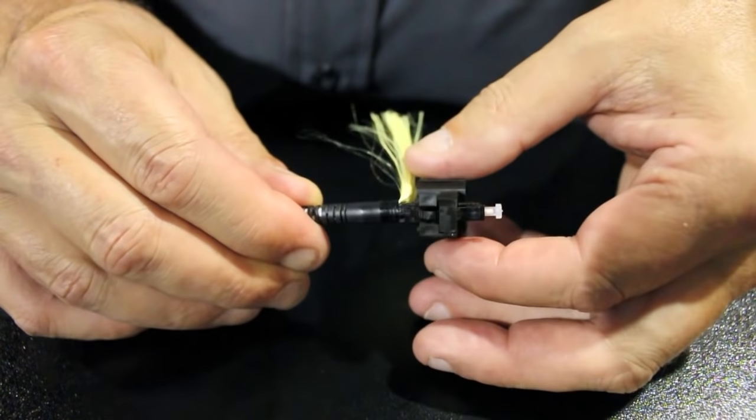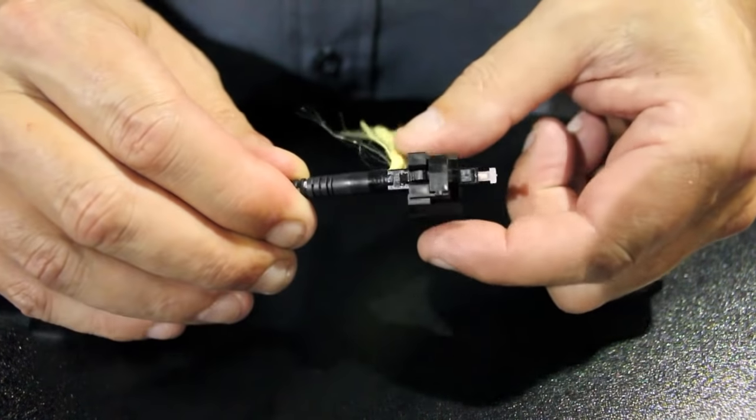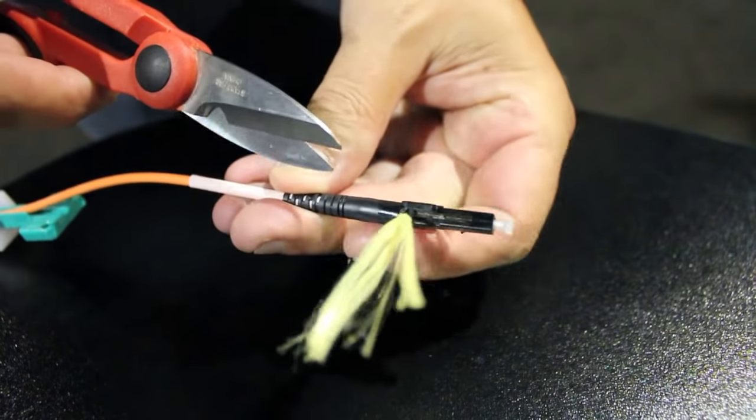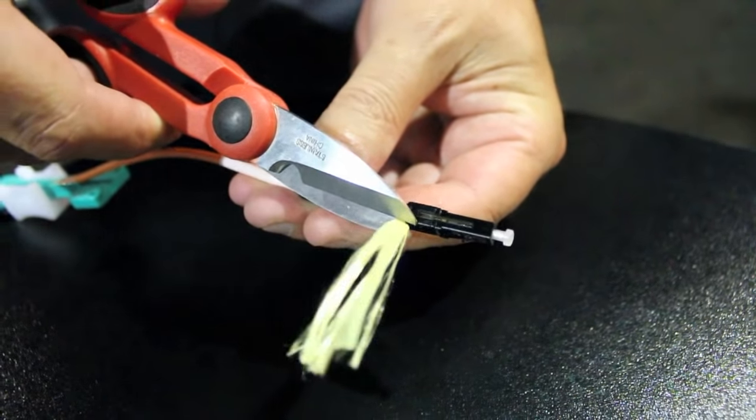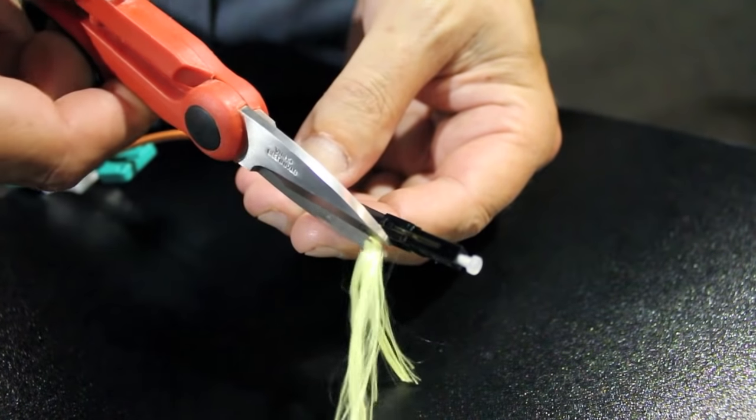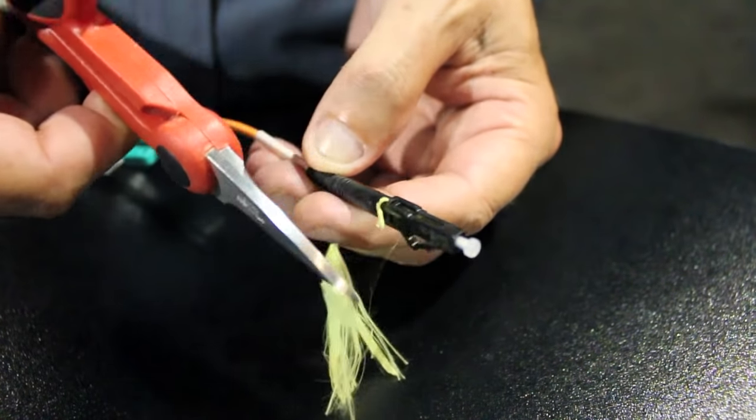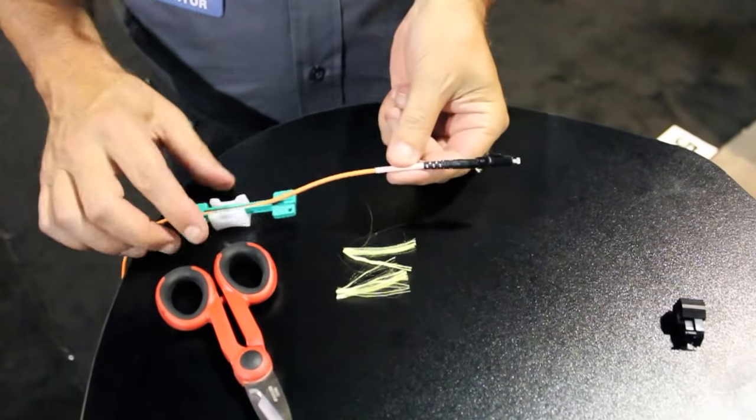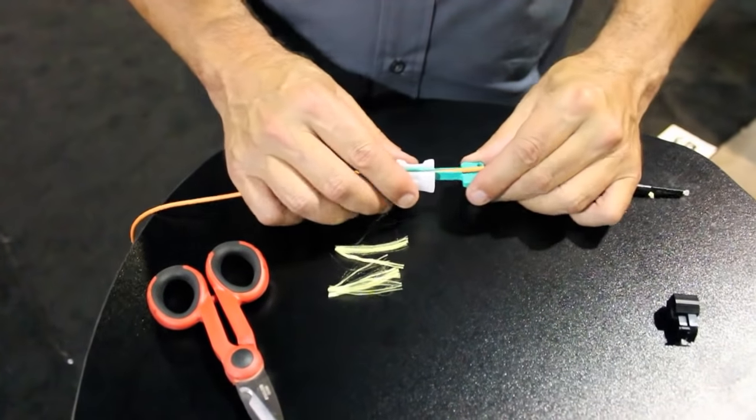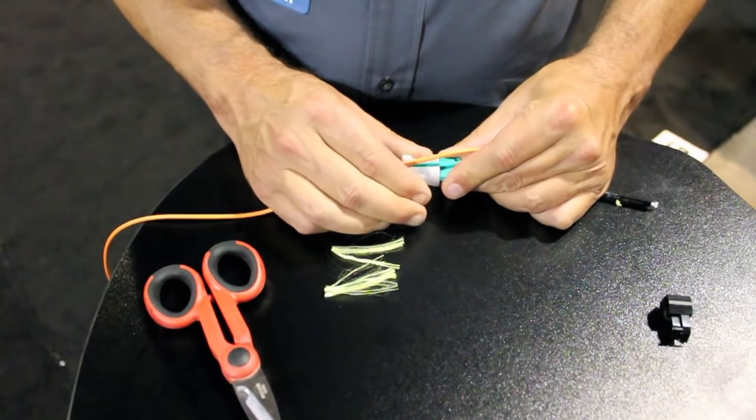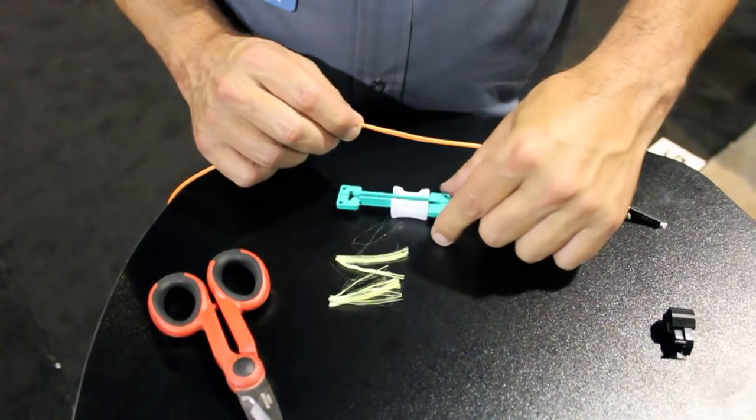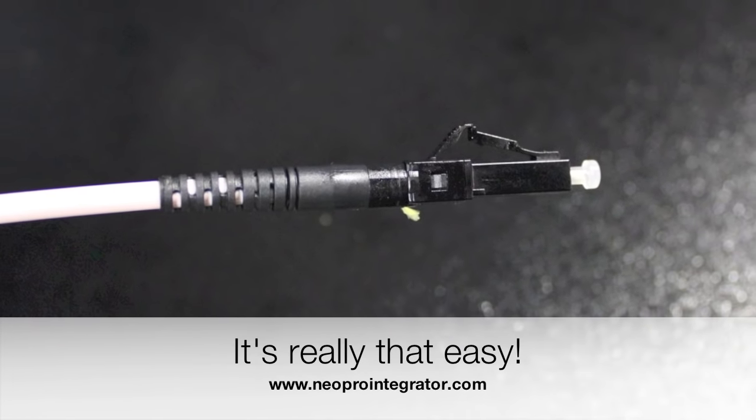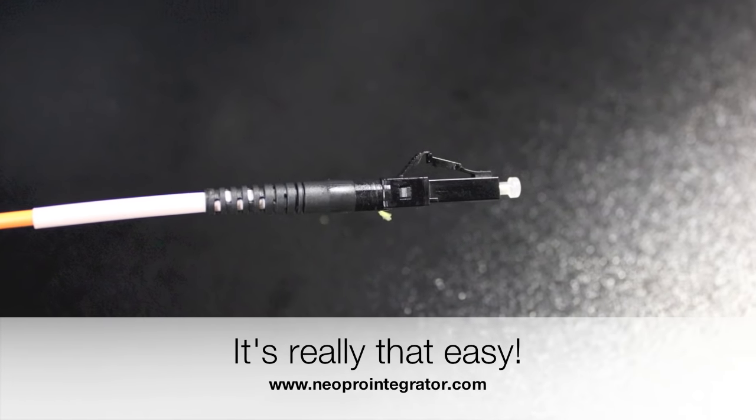And then you can remove the tool. Just squeeze the sides harder. And the tool will open up and allow you to see the final connector. Now you can trim the Kevlar off. And at this point, you're done. So you can remove the clamp. And you've got a finished connector. Fiber termination in five minutes. It's really that easy.